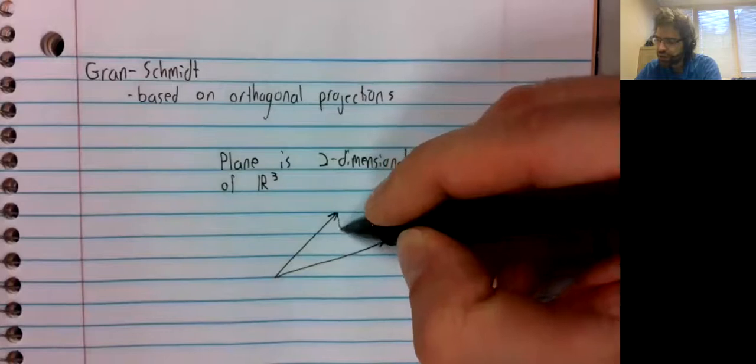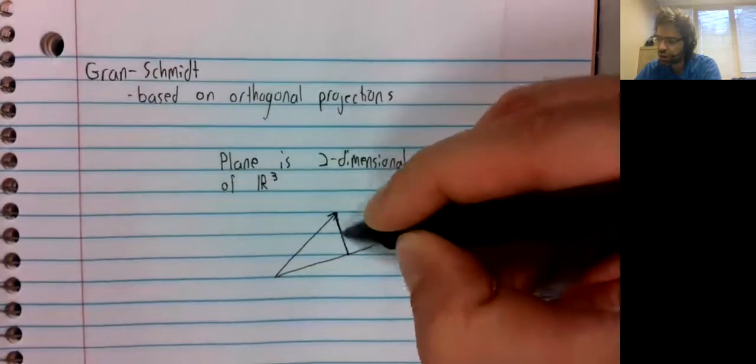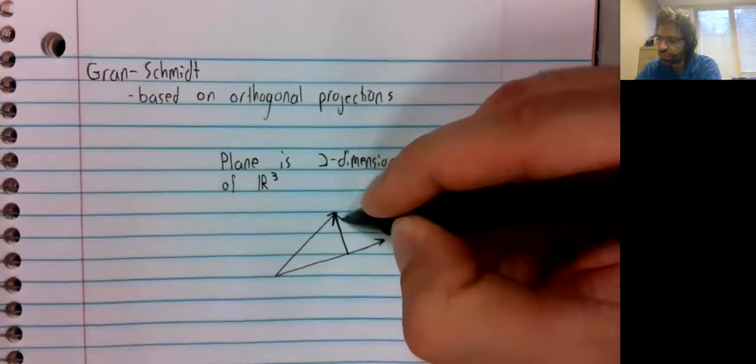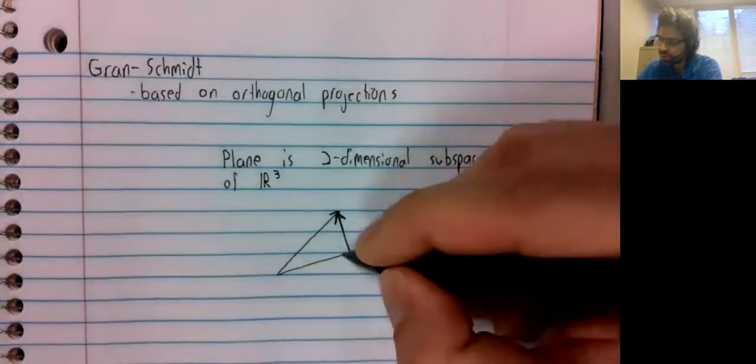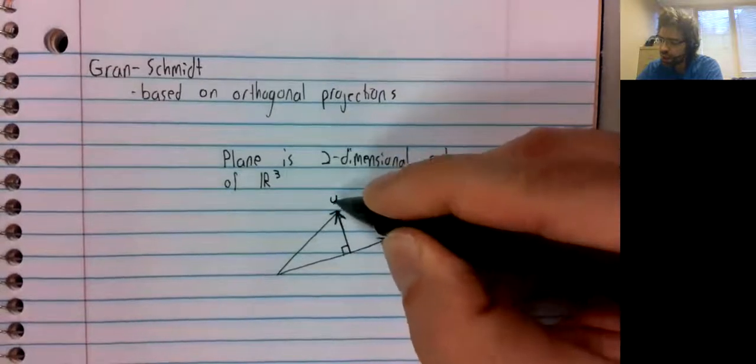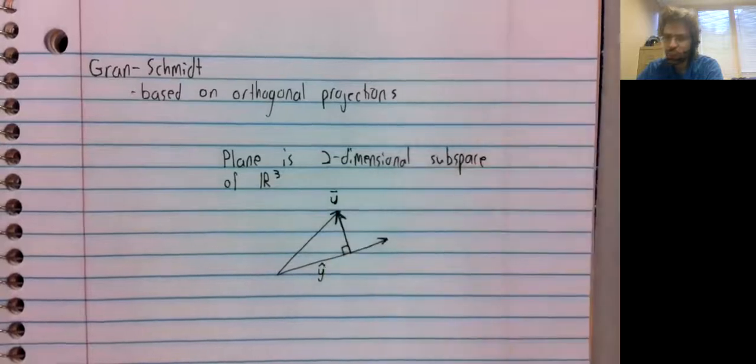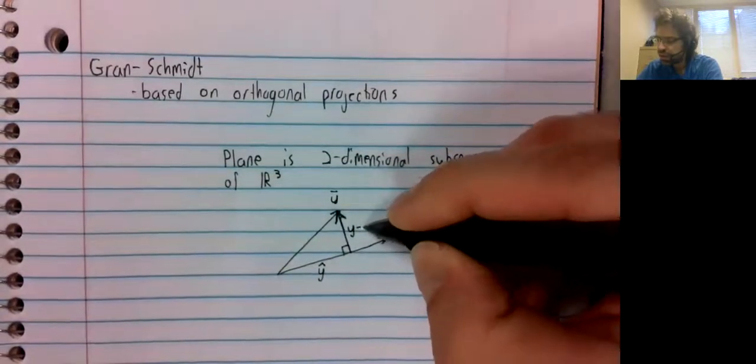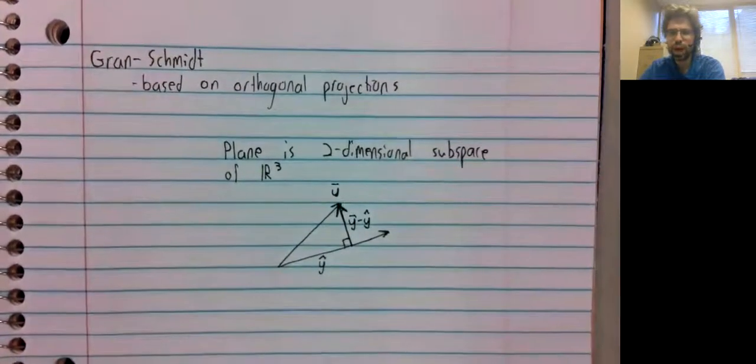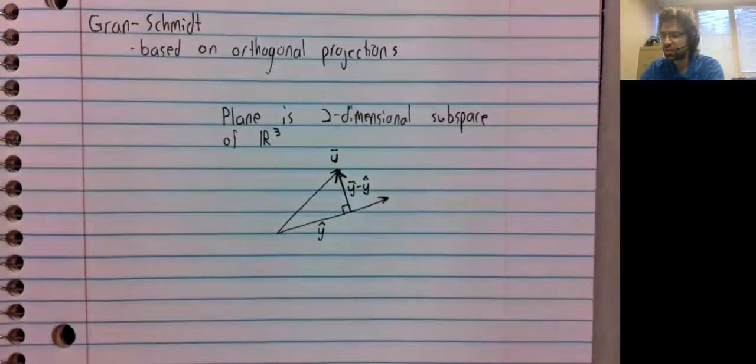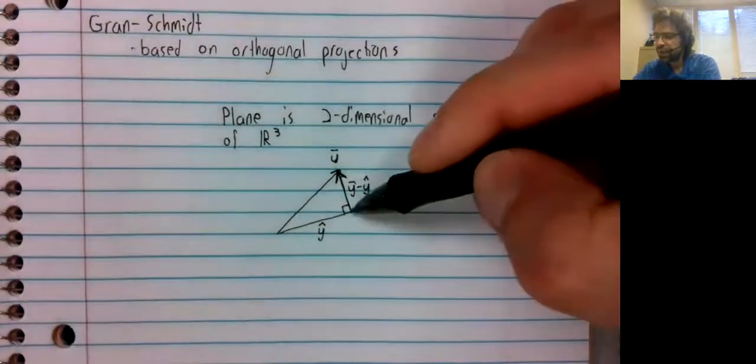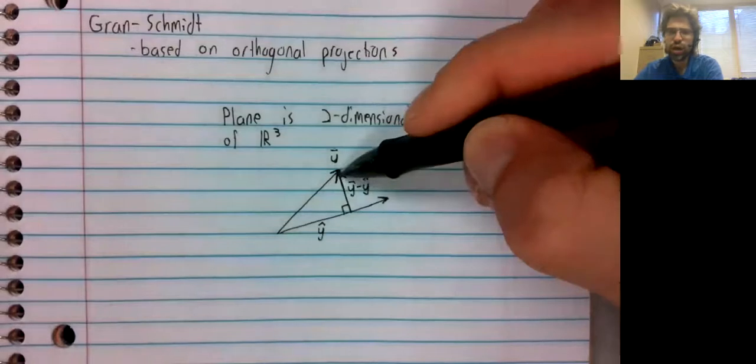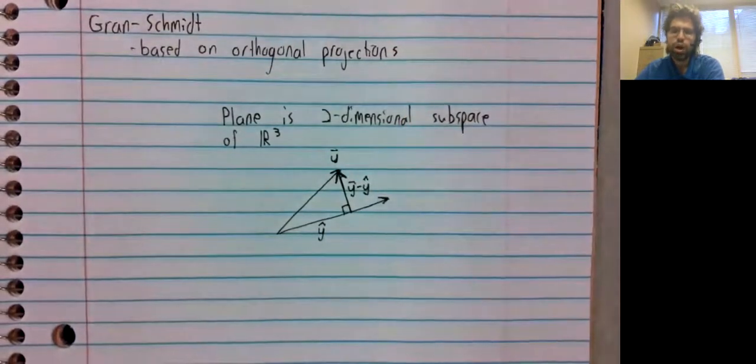We can project one of these basis vectors onto the other to get to that vector. So if this is y, the projection is y hat. This vector is y minus y hat. Now this vector and this vector are orthogonal. Orthogonal vectors are linearly independent.